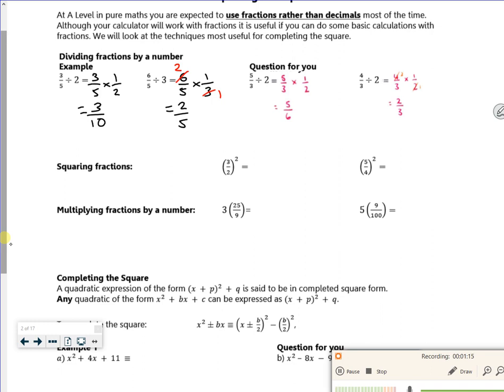Right, so squaring fractions, you square the 3, everybody does, but you also square the 2, which people forget. So that's 9 over 4. Same with this, square the 5 is 25, but you square the 4 as well to give you 16. So that's straightforward, but this is the daft mistakes we make.